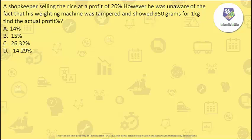This particular question was asked by Vinay from GN College. The question is: a shopkeeper is selling rice at a profit of 20%. However, he was unaware that his weighing machine was tampered and showed 950 grams for 1 kg. Find the actual profit. Initially the shopkeeper was selling at 20% profit, but rather than selling 1000 grams he was actually selling only 950 grams, giving him an additional 50 grams of profit.